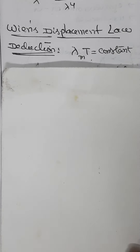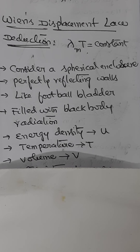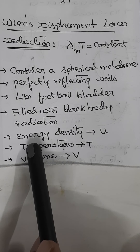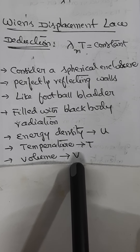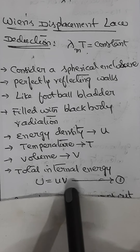Now we shall derive Wien's displacement law. To do so, consider a spherical enclosure with perfectly reflecting walls capable of expansion radially outwards like a football bladder. Let it be filled with black body radiation of energy density u at temperature T. If V is the volume of the enclosure, then the total internal energy U of the radiation can be represented as U = u·V. Let this be equation 1.